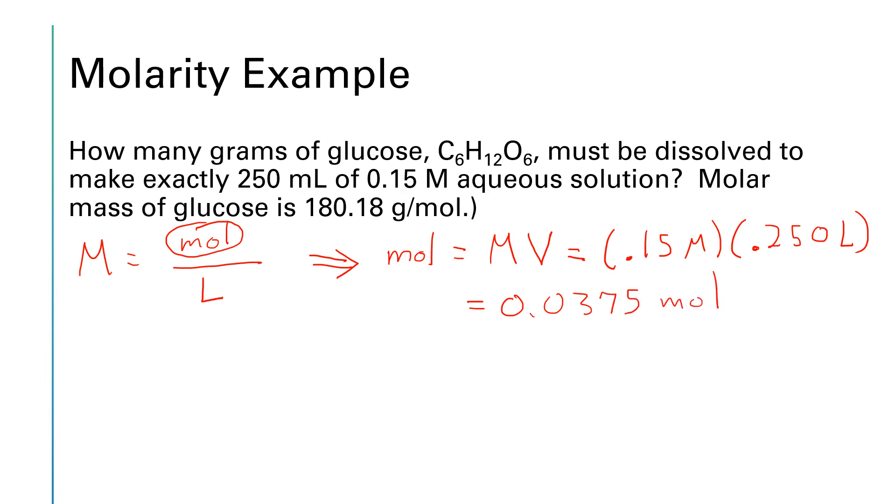Now I really should round this to two sig figs, but I'm going to carry the extra sig figs through to the very end of the calculation and round at the end. So we have 0.0375 moles of glucose.